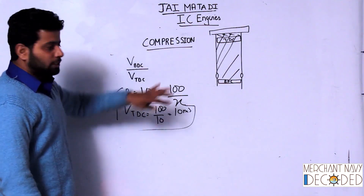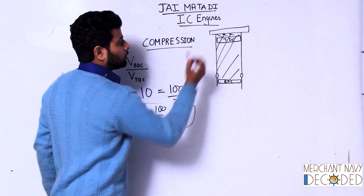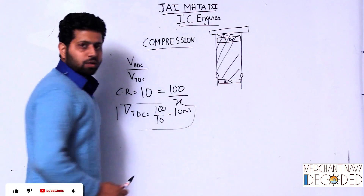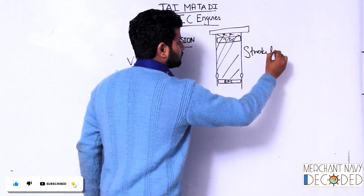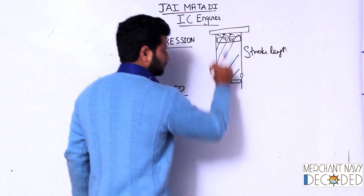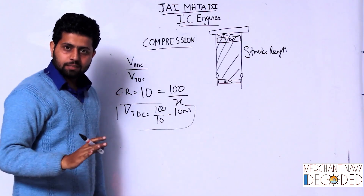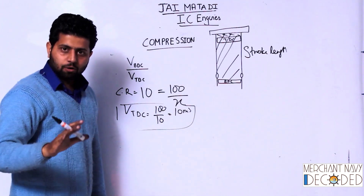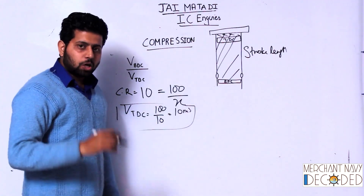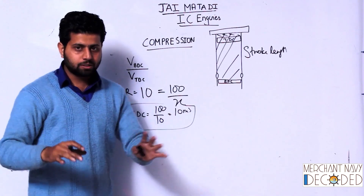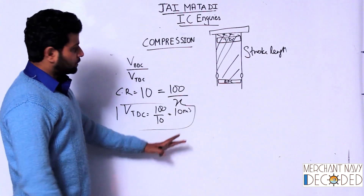When talking about compression ratio, understand one thing: the more you increase the compression ratio, that means your piston is moving more — that means your stroke length is increasing. You just have to remember that, because when I talk about the Otto cycle, Diesel cycle, petrol engines, you have to remember this: more compression ratio means more stroke. That is sufficient.